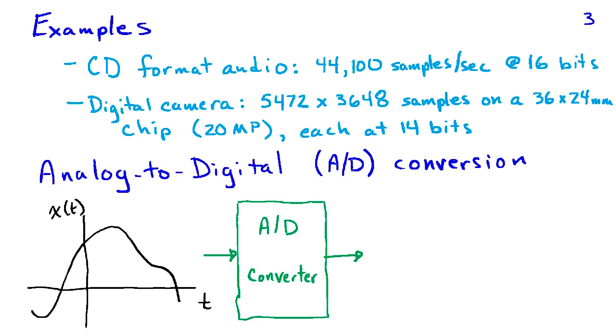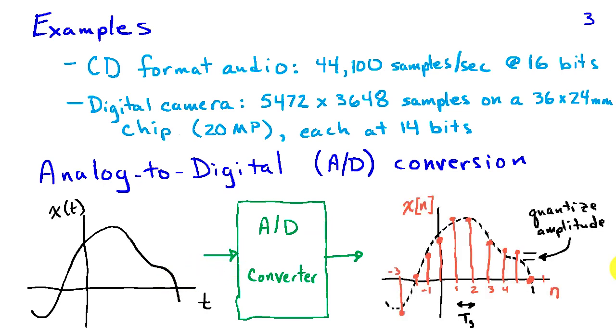So this process of converting from a continuous amplitude and continuous time or space signal to these samples that we can represent in the computer is called analog to digital conversion. And the device that does the conversion is called an analog to digital converter. So what happens is we take a continuous valued voltage and we apply that to the analog to digital converter, and it is going to give us a set of samples that are at distinct times. In this case, we are showing them spaced by t sub s, and each of those samples may not get the amplitude exactly right because we are using a finite number of bits.